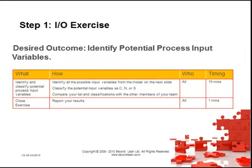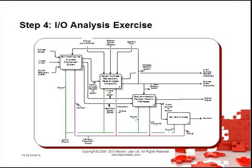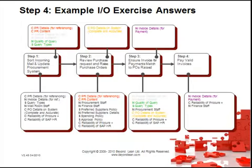Your desired outcome is that you've identified potential process input variables. Again, there are templates for this in the student centre in the template folder. Here's an example of your IO analysis and some of the answers for that IO analysis.